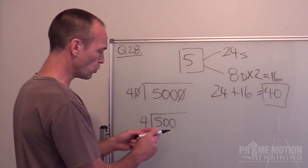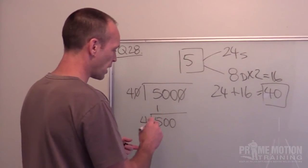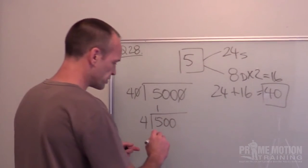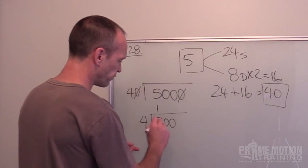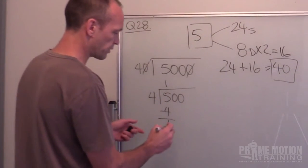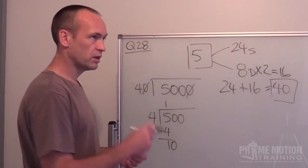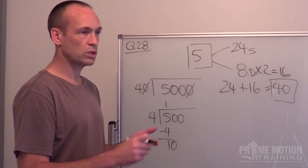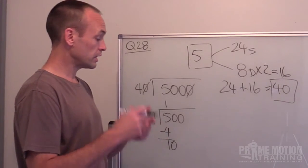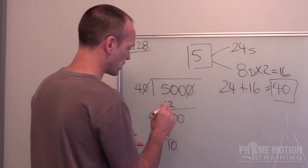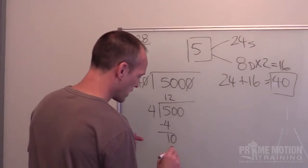Alright I'm going to put 4 into 5 to begin with. That'll happen once. 1 times 4 is 4. When I take the 4 from the 5 I'm left with 1. And I bring down the next number. Now my equation is 4 into 10. 4, 8, 12. Well it won't go 3 times. 4, 8. It will go twice. 2 times 4 is 8.